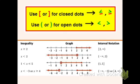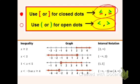Here's a summary: use brackets for closed dots — that's when you're including the endpoint and the symbol has a line underneath. Use parentheses for open dots — when there's no line underneath the inequality symbol. Below is a summary of an inequality, a graph, and interval notation.